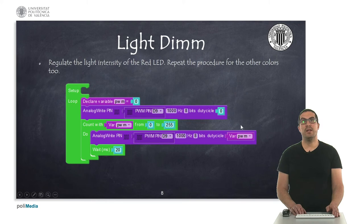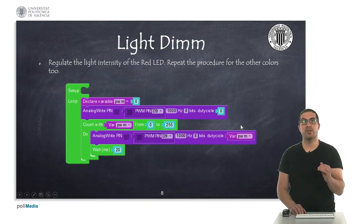And finally, here in this example, what I'm doing is, again, I'm using the analog write instruction, so what I'm doing is regulating the intensity of the light, but only in one of the pins, so it's the red color.